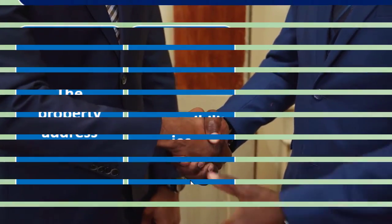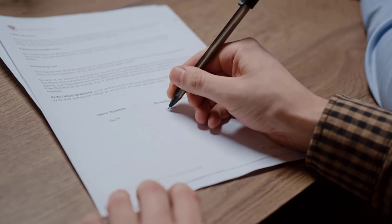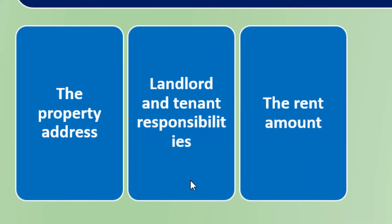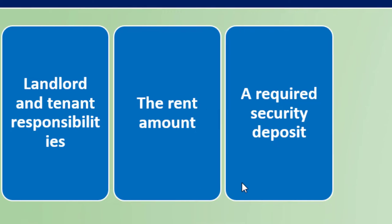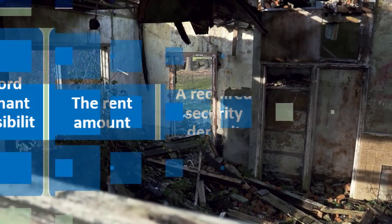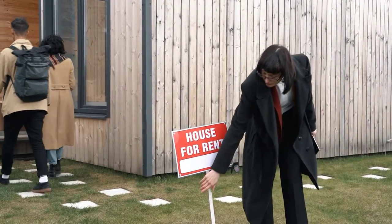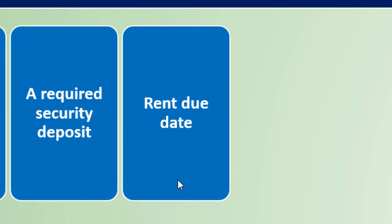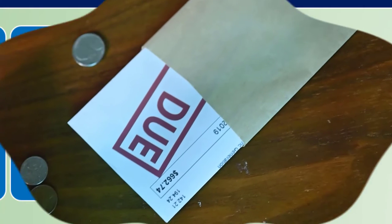This is a legally binding set of terms. It should be clear so that each party knows up front what they're agreeing to and what the consequences are if they violate the contract. The rent amount would clearly be listed, along with a required security deposit — the upfront payment that safeguards against damage to the property if the tenant leaves the place in worse condition than when they moved in.